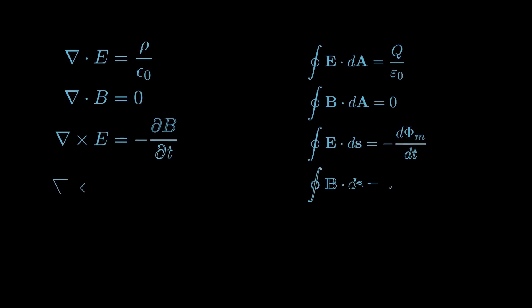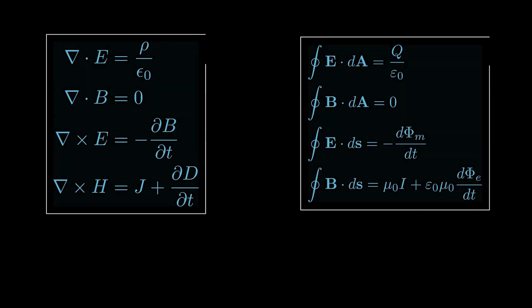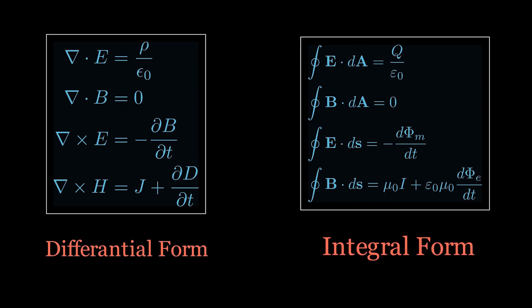Maxwell equations are a set of fundamental relationships that explain how electric and magnetic fields are generated and interact with each other. Electromagnetic radiation and much of today's electrical and telecommunication technologies are based on four magic equations, which are considered the most important equations of all time. Let's look at them one by one.